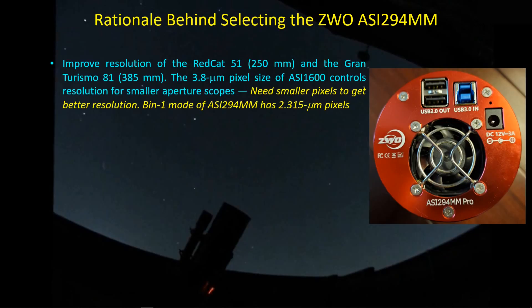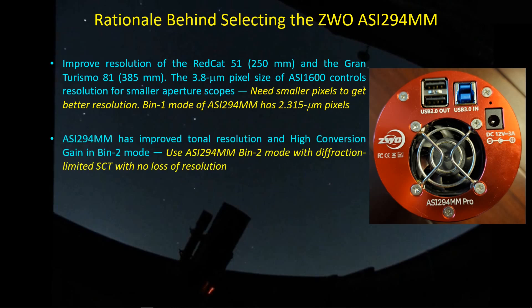I have been using the ASI 1600MM, which has a 3.8 micron pixel size, but I was looking for a camera with a much smaller pixel size to get more resolution out of my Red Cat 51 and my GT81. In bin one mode, I get a pixel size on the order of 2.315 microns, and that should translate directly into a reduced full width at half maximum as seen in the images. A second reason for getting this camera is to take advantage of the improved tonal resolution of the 14-bit ADC in bin two mode, and also the high conversion gain that allows you to regain dynamic range and reduce read noise if you get above a gain of 120 with this camera.